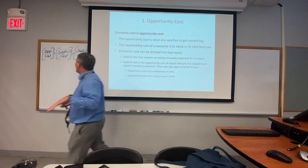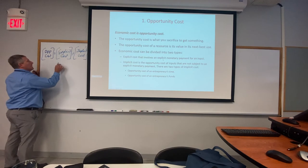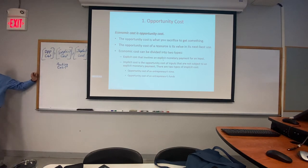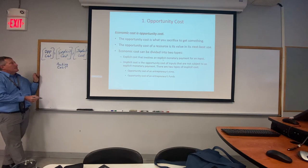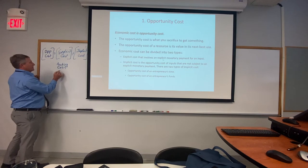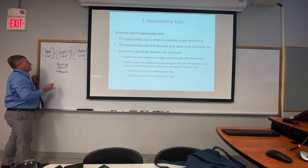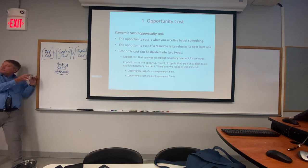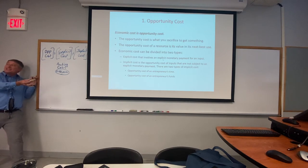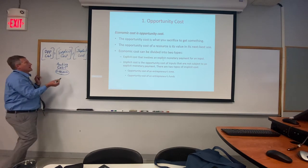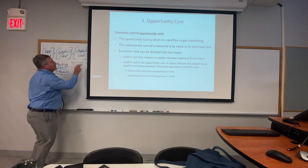Explicit costs are basically accounting costs — things that have an easy receipt or price tag. If we spent forty thousand dollars hiring somebody to do maintenance, that's an explicit cost. We could have spent that forty thousand on something else, so there's an opportunity that we missed. That's your explicit cost.